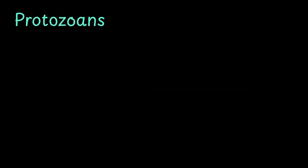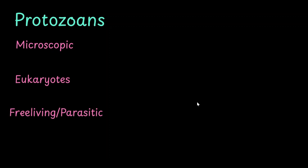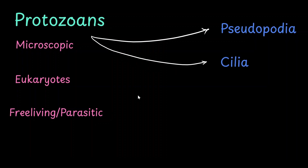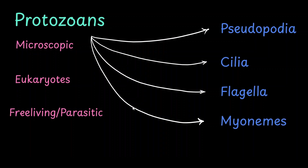Protozoans are microscopic eukaryotic cells which could be free living or parasitic. If they are free living they have to move around in water; if they are parasitic they have to move through the host body. Whatever their lifestyle, they are very versatile in their movement because they have different modes of locomotion: first using pseudopodia, second using cilia, third using flagella, and fourth using myoni. In this series of videos we are going to look at each of these specific locomotion types seen in protozoans.